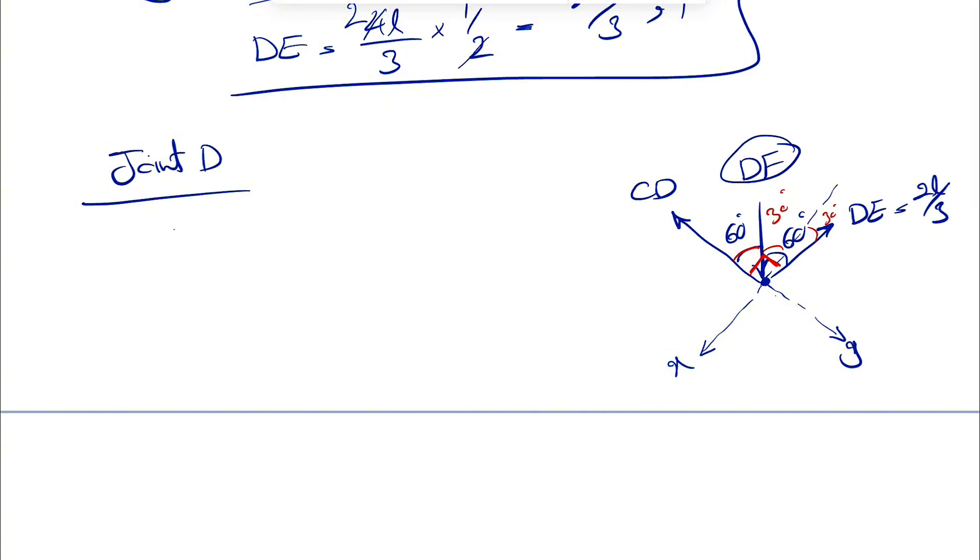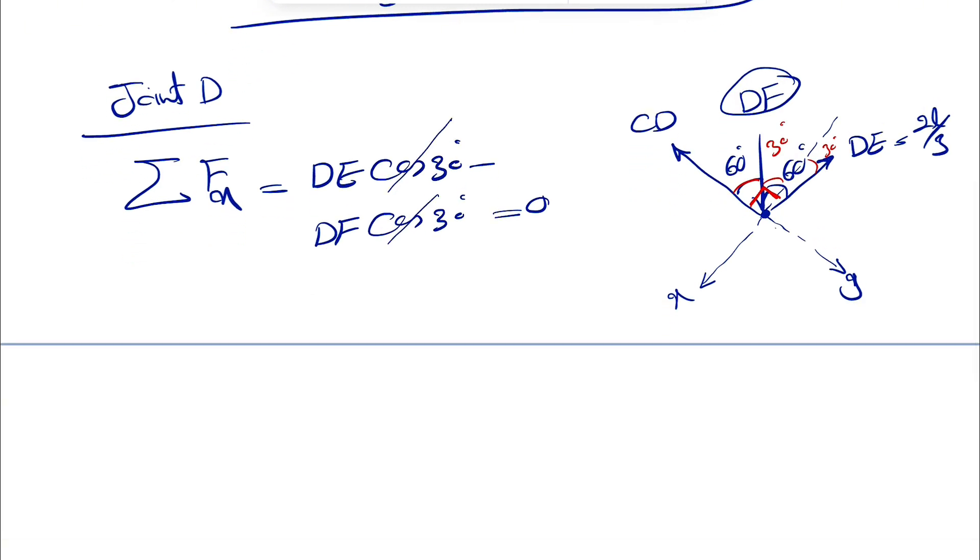We're not going to do sum of all forces in Y direction because we are now looking for CD. That's actually why I put my Y axis on CD. So we can get rid of CD. And we can find DF in here. So we have DE cosine of 30 minus DF cosine of 30 degrees equals zero. So that shows that our DF is basically the same as DE.